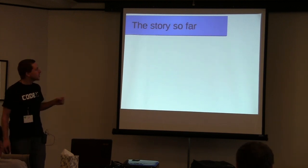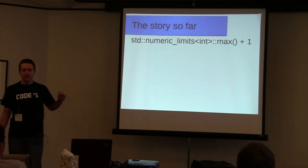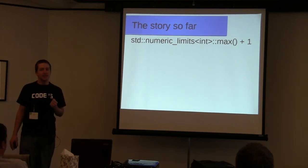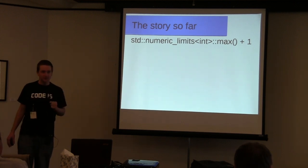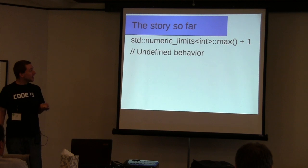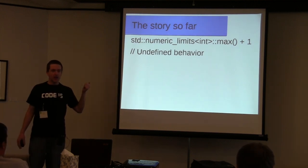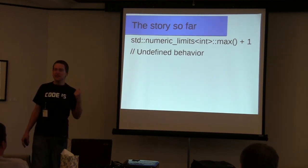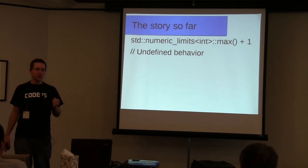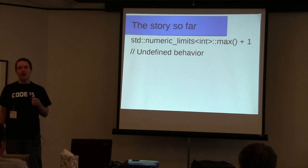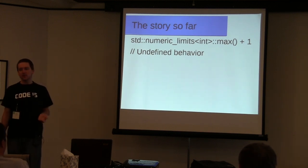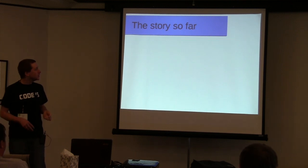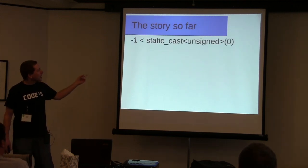To start off with, let's say we have this expression. By a show of hands, how many people think that this is undefined behavior? We have the maximum int plus one. It is integer overflow. You can set that to wrap around using, for instance, GCC the -ftrapv flag. On some architectures it does wrap around, on other architectures it's a trap. But in general, it's undefined behavior, and compilers do optimize assuming that this never happens.